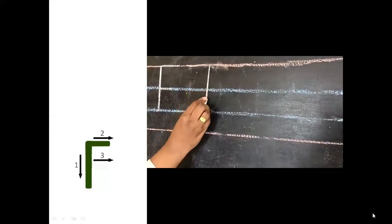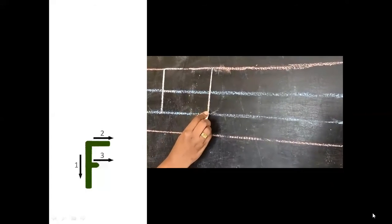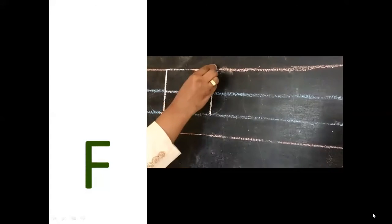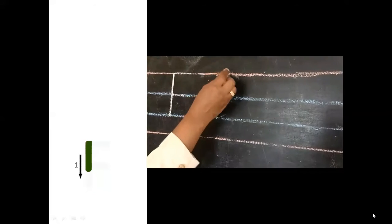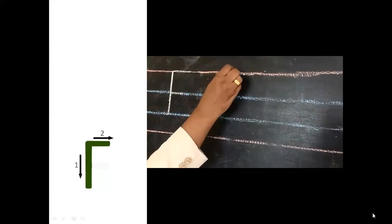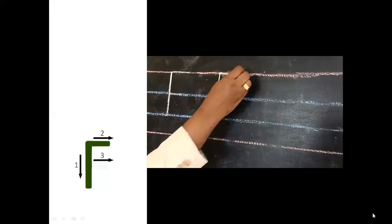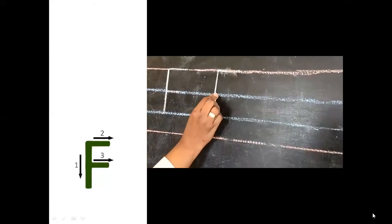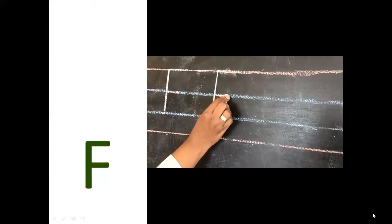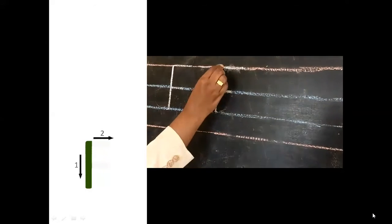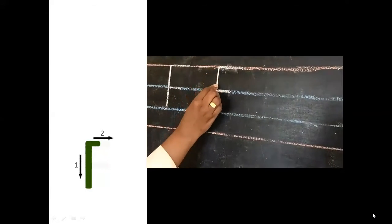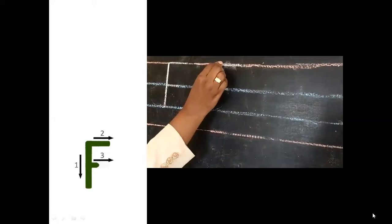A standing line from the first to the third line, then a sleeping line from the first line — the standing line on the first line — and then another sleeping line from the standing line on the second line. So this is our capital F.